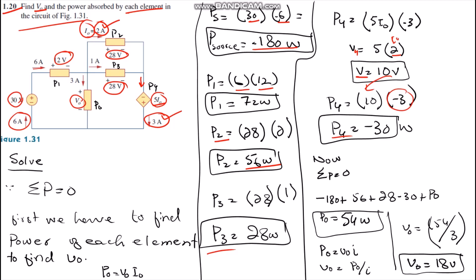We simply use the summation technique in which we know that the summation of all powers equals zero. We arrange all powers equals zero, and then after mathematical calculations, the summation of all powers gives us P naught equals 54 watts.